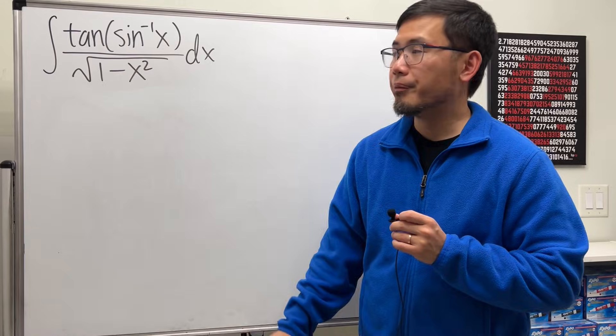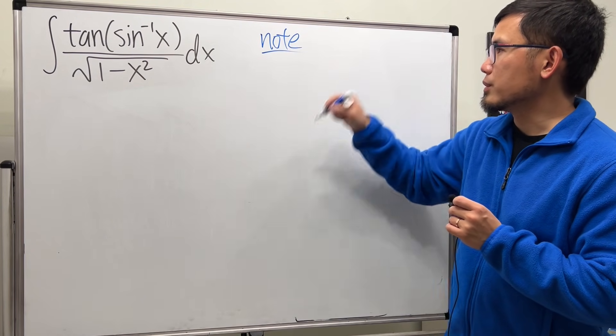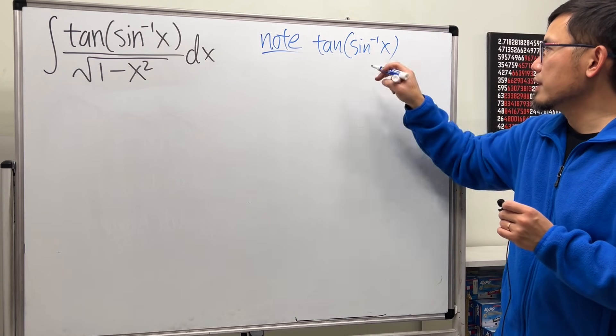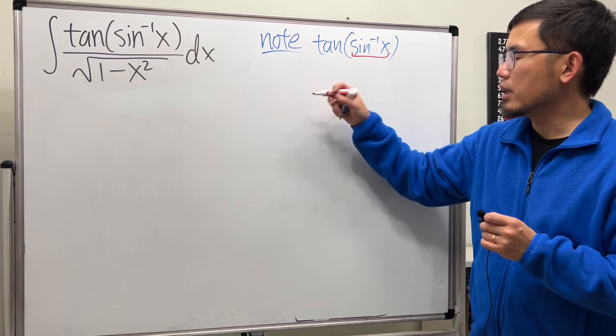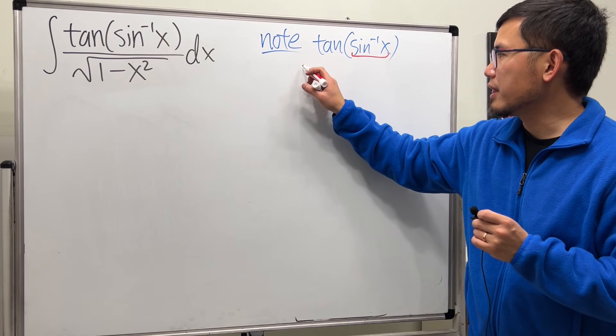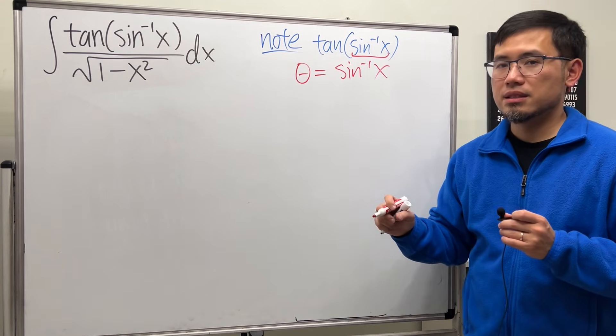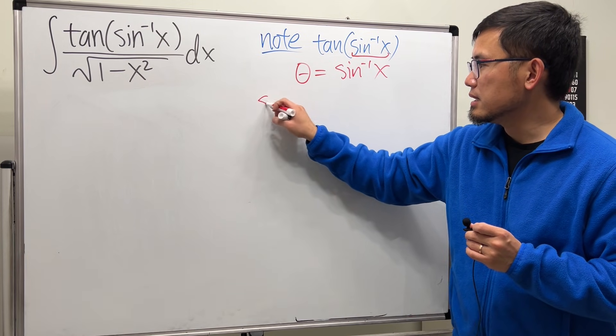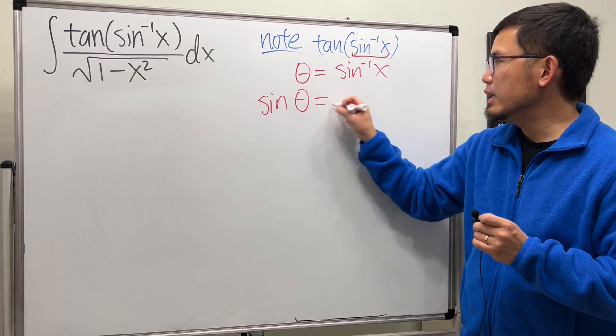Let me show you. So here's my note, just focus on tangent of inverse sine of x. This right here, for the inside, I'm just going to say okay, inverse trig function represents an angle. I'm just going to call that theta. So theta equals inverse sine of x. And what good does this do? This means we can look at this as the original sine of theta equals x.